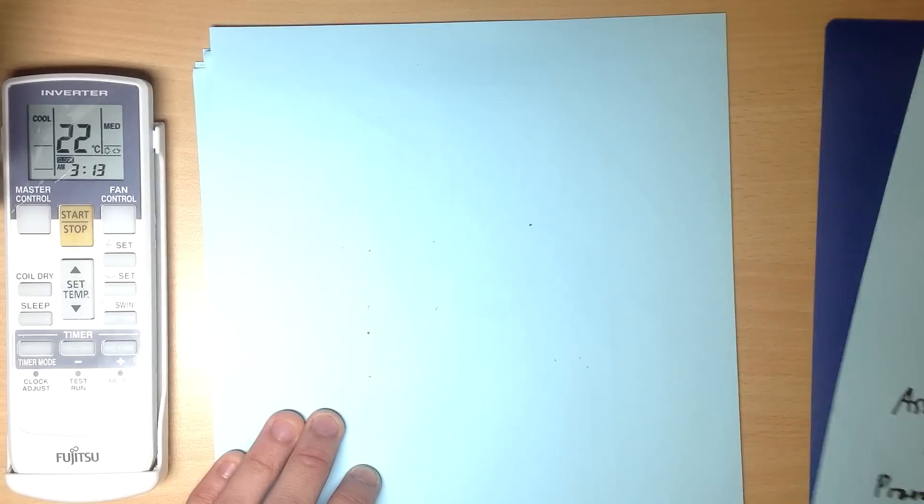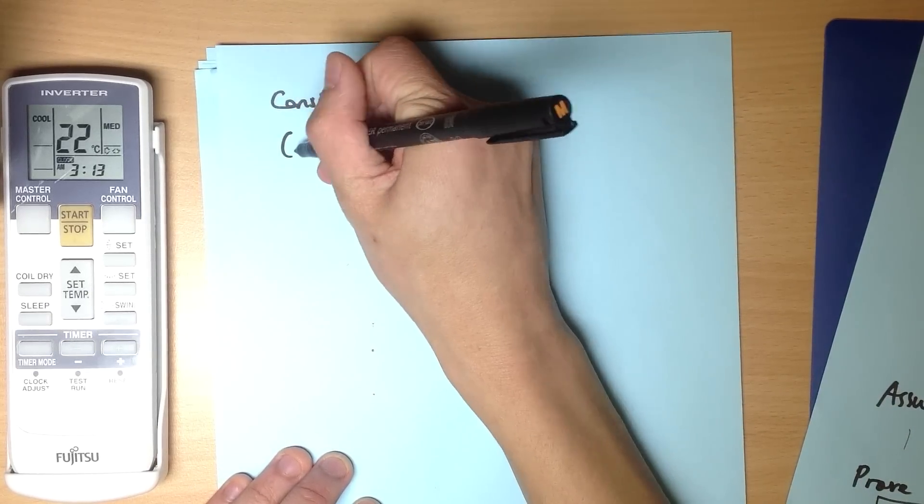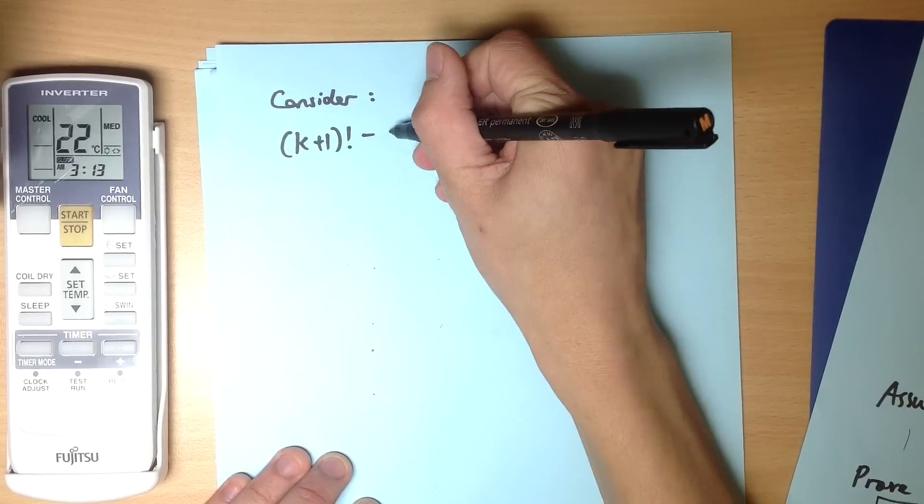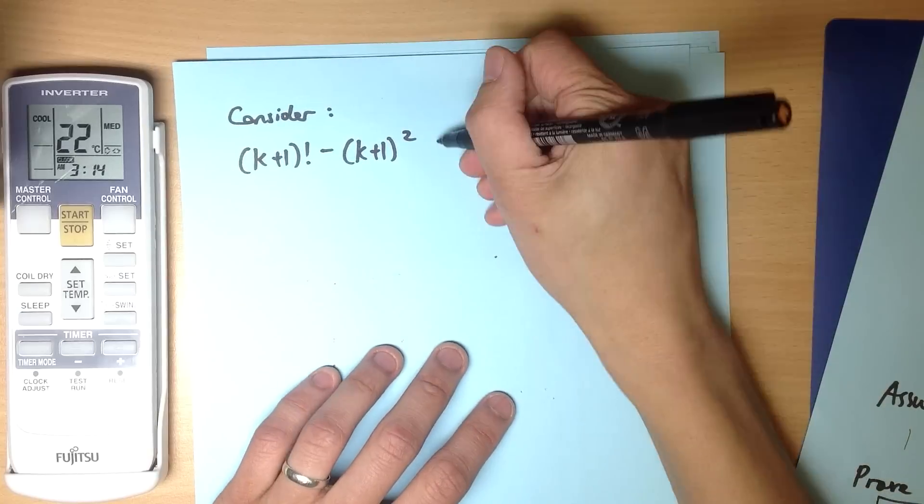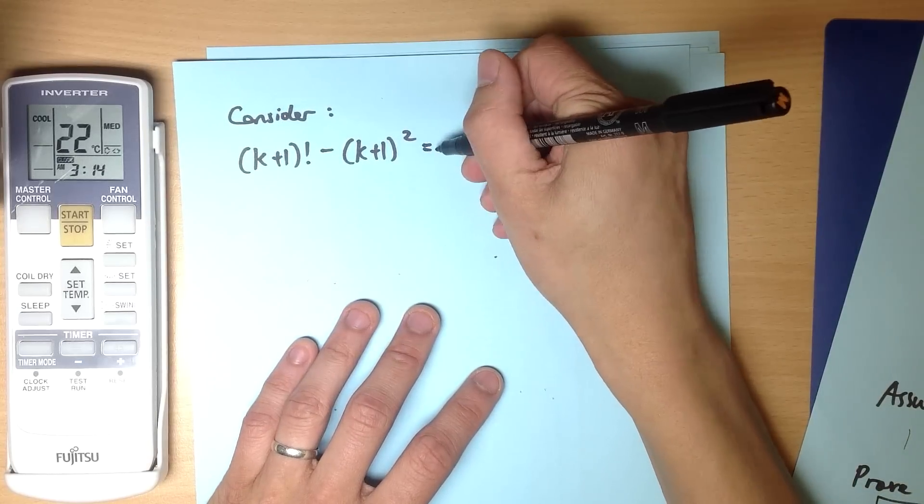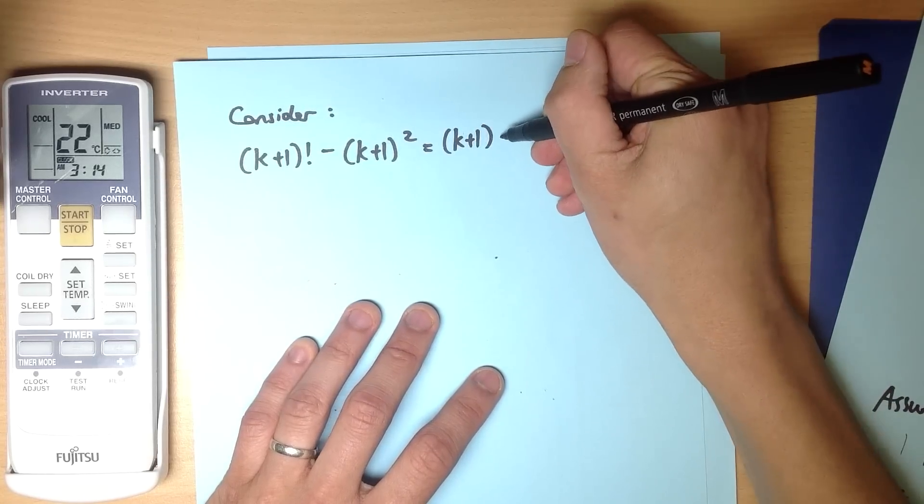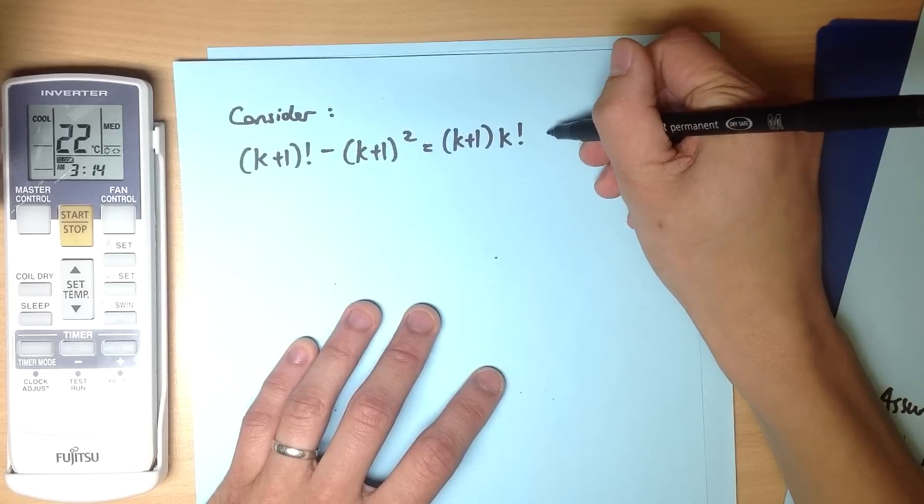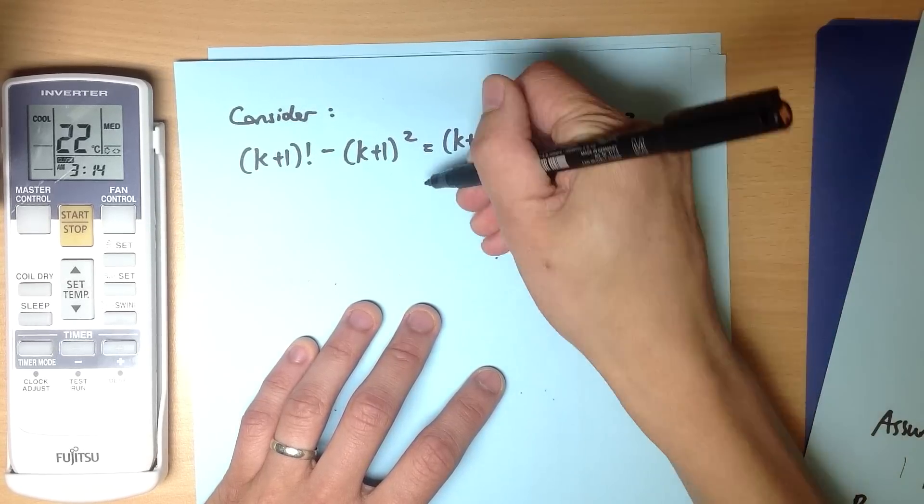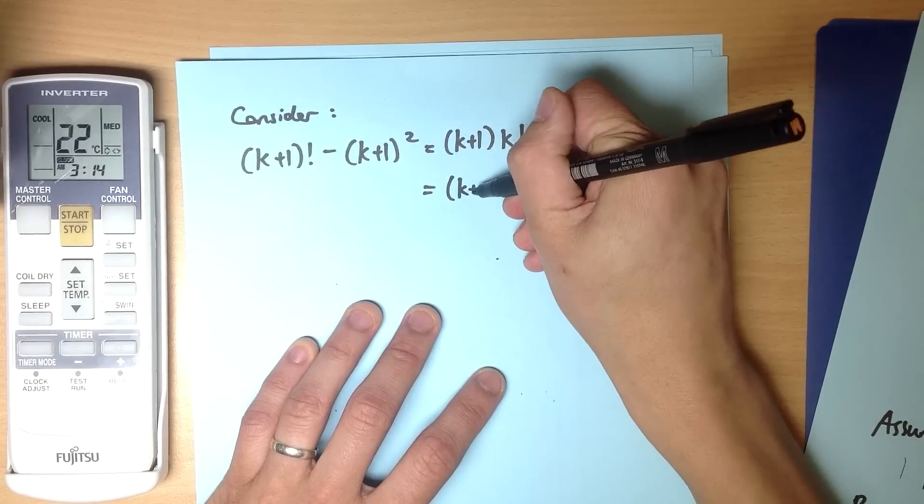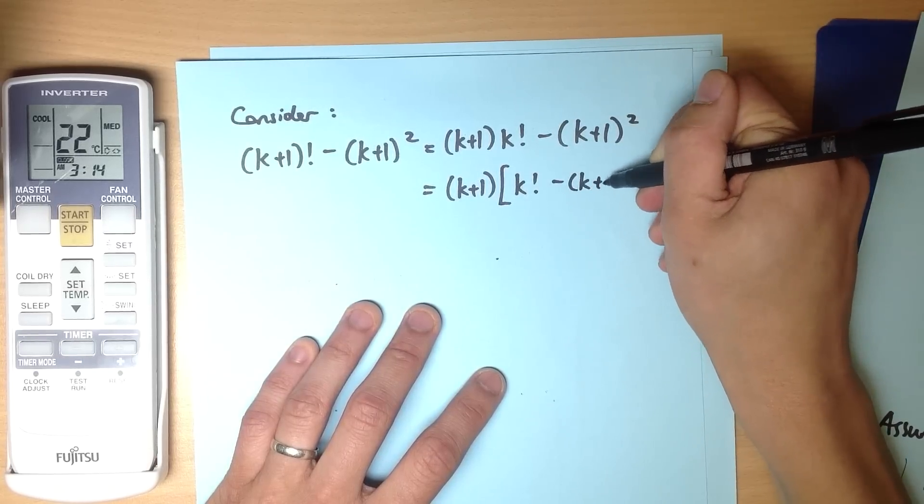So I'm going to work with this guy here on the left hand side. Let's consider what I had there on the left hand side, namely (k+1)! - (k+1)². Let's think about this. If I rewrite this so I can take out a factor, that (k+1) factorial is (k+1) by k factorial, and then I've got my (k+1)² here. So let me take out a factor of (k+1). What that's going to leave me with is k factorial and (k+1).